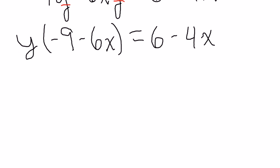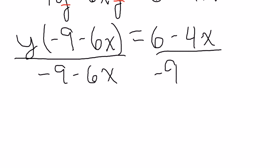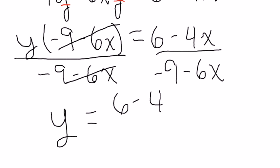We're almost there. Basically, now we're just going to divide. So, we're going to divide both sides by negative 9 minus 6x because that will cancel out on the left-hand side. Those two cancel and we get y equals 6 minus 4x over negative 9 minus 6x. And now we've solved for y.